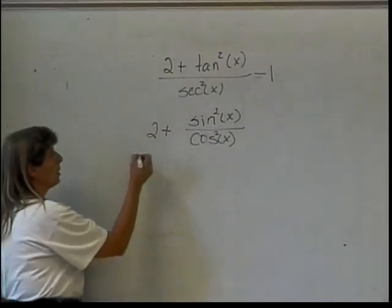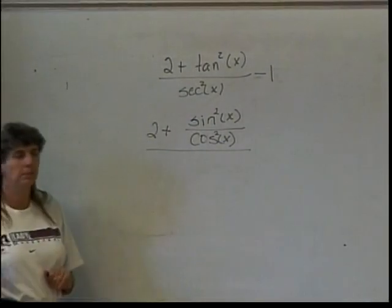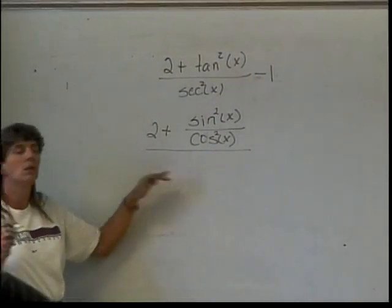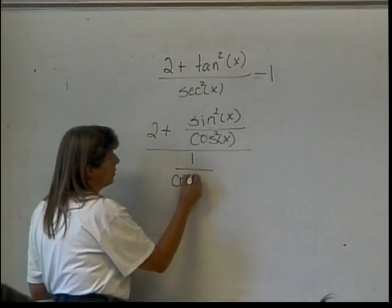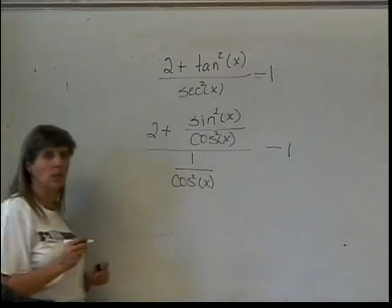So, I square my numerator and I square my denominator. Now, I'm going to divide by what? 1 over cosine squared of x. And let's not forget that I still have this minus 1 out there.